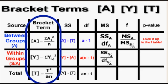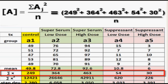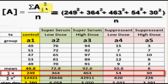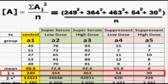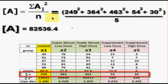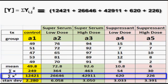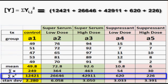Now let's find our bracket terms using the notation from the Keppel and Wickens book. For the A bracket term, this refers to your groups. Take the sum of each group — which we've already calculated — square each of those, and divide by the number of rats per group. The Y bracket term stands for the individual rats, so here we take the sum of each individual number squared. For example, the sum of X squared for the control comes from 49 squared plus 51 squared plus 47 squared, and so on, to get 12,421.